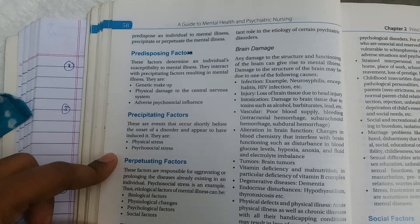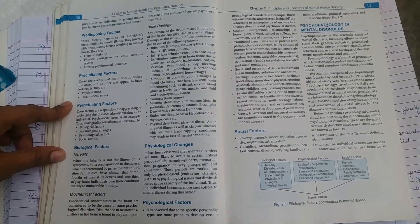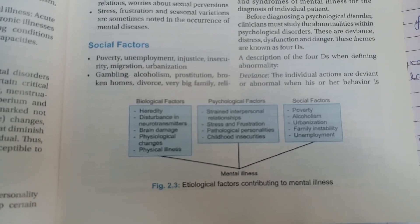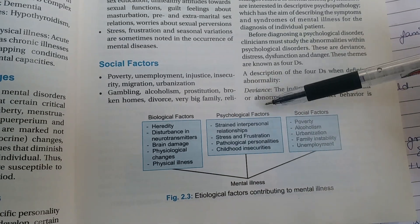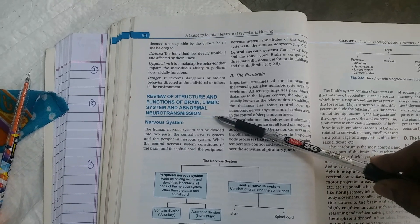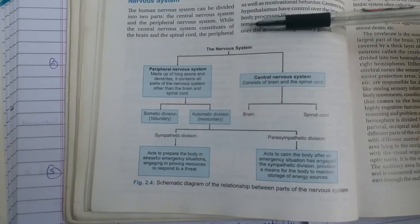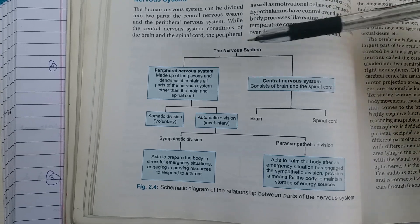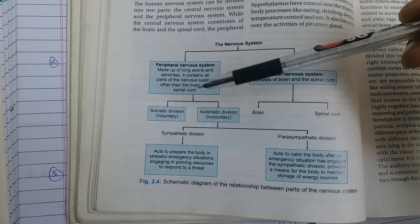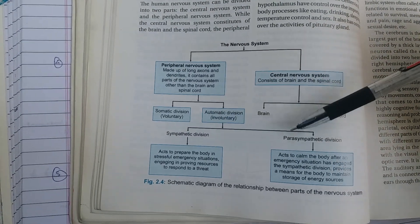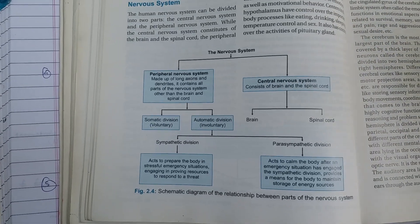Predisposing factors include brain damage. The psychopathology of mental disorder is also reviewed. The nervous system consists of the Peripheral Nervous System and the Central Nervous System. The Peripheral Nervous System includes Somatic (voluntary movement control) and Autonomic (involuntary) divisions — Sympathetic and Parasympathetic. The CNS consists of the brain and spinal cord.